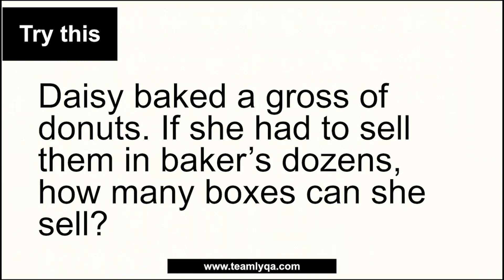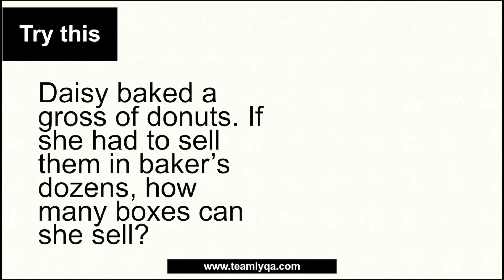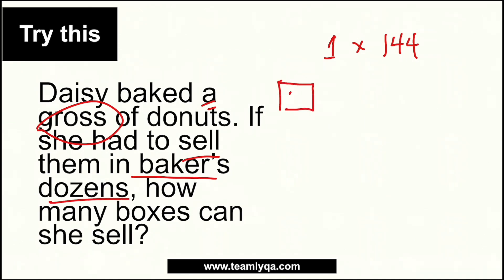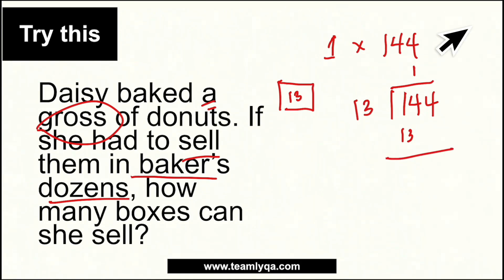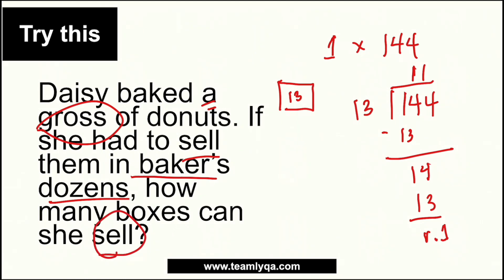It says she has a gross of donuts. This is where the problem comes in if you're not familiar with the wordings — because a gross is 144. So if she has a gross of donuts, that is 1 times 144, which is 144 (also 12 times 12). She needs to sell them in baker's dozens, meaning each box must contain 13. So we do 144 divided by 13. That gives us 11 with a remainder of 1. The question asks how many boxes she can sell — she can only sell 11 full boxes. The answer is 11 boxes.